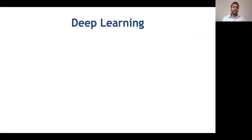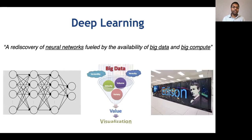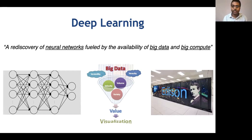The way we have been doing this lately is primarily using deep learning, which is essentially a rediscovery of neural networks fueled by the availability of big data and big compute. Many of you may know these neural networks, which are so popular nowadays — they were conceptualized back in the 1950s, and became popular again in the 80s, but they couldn't really take off the way they have in the last 10 years because of the lack of those two key ingredients: big data and big compute.